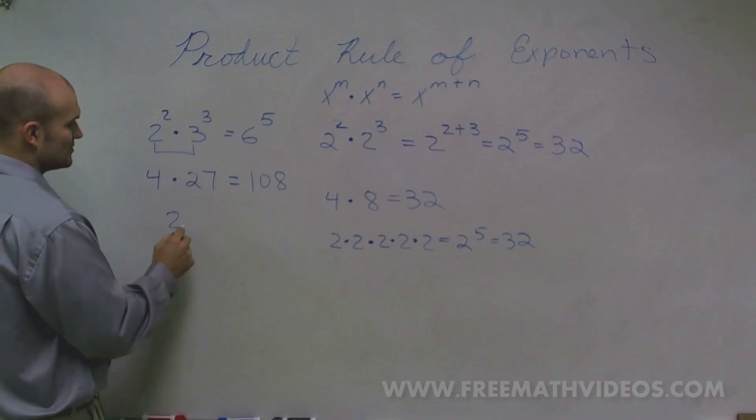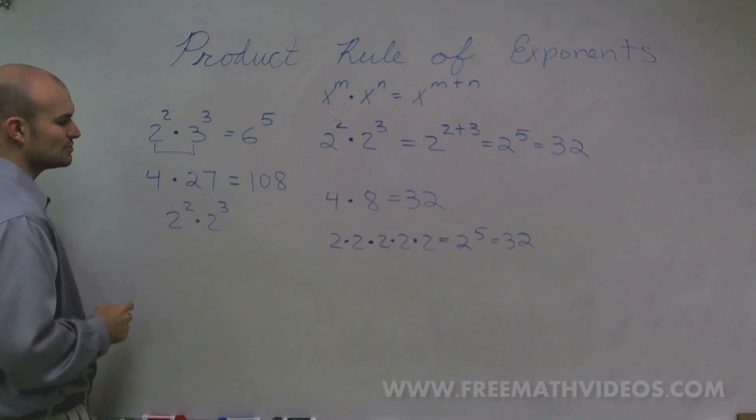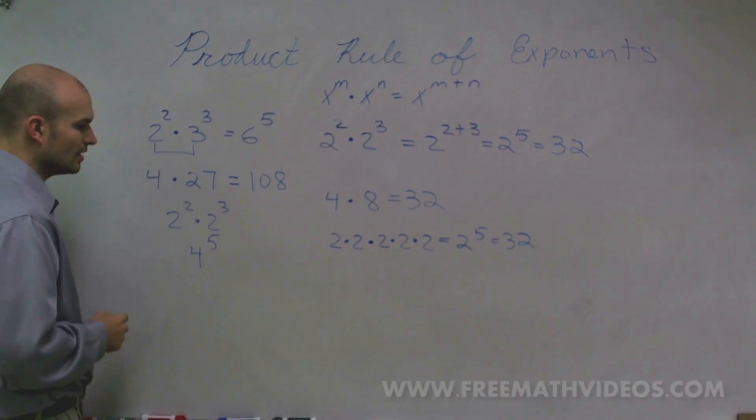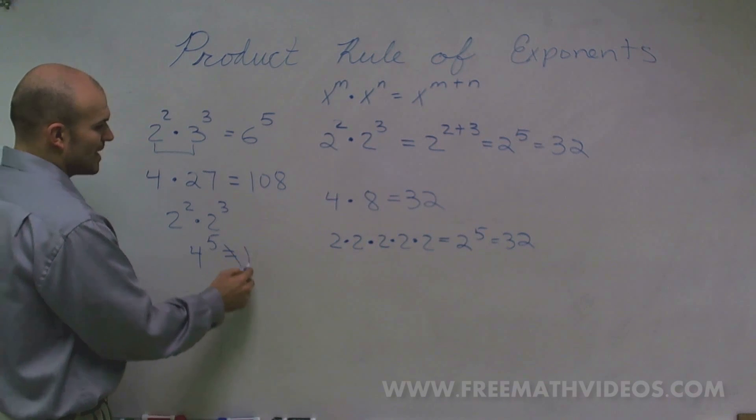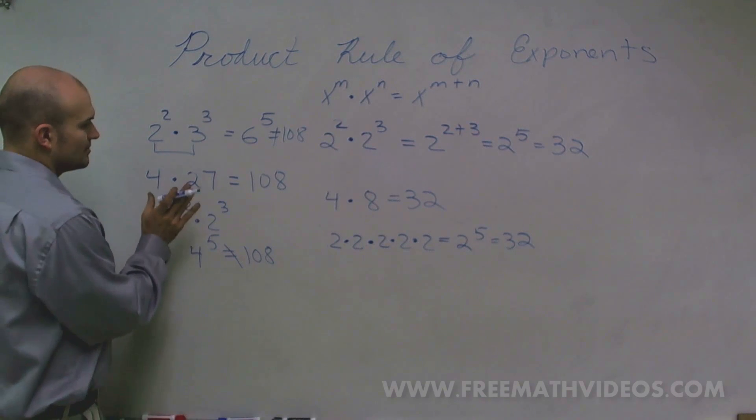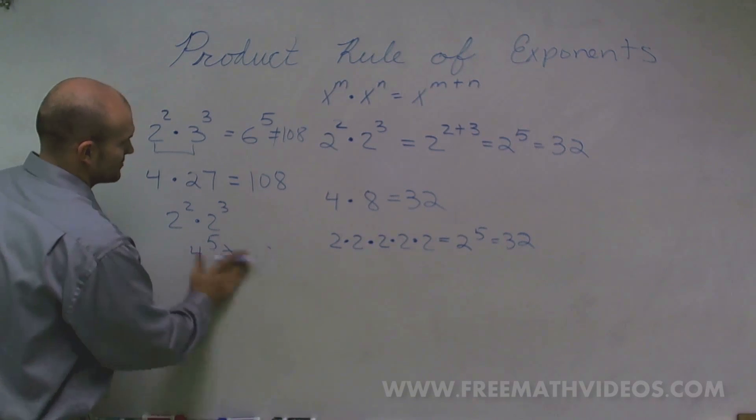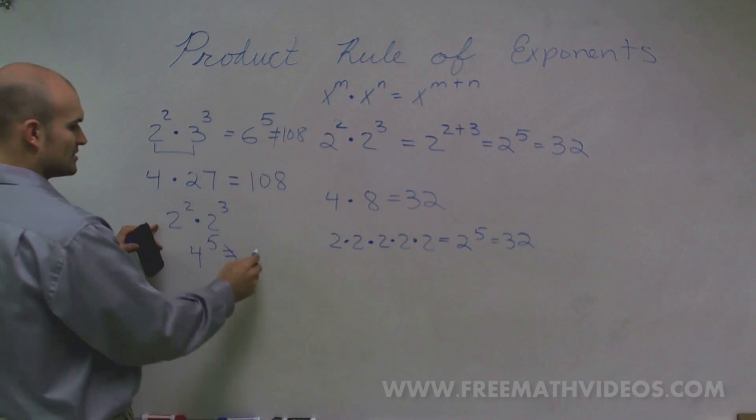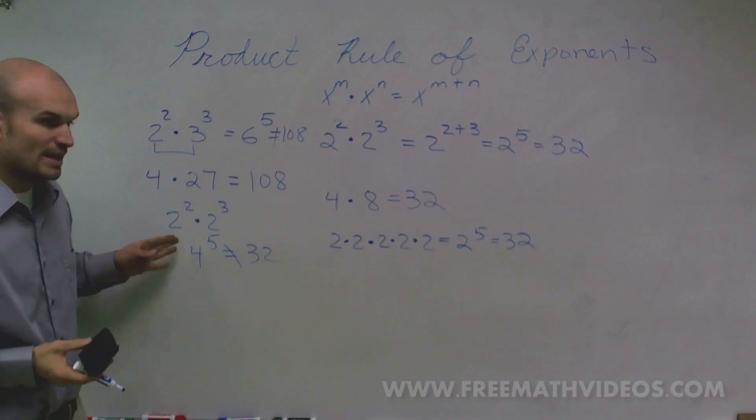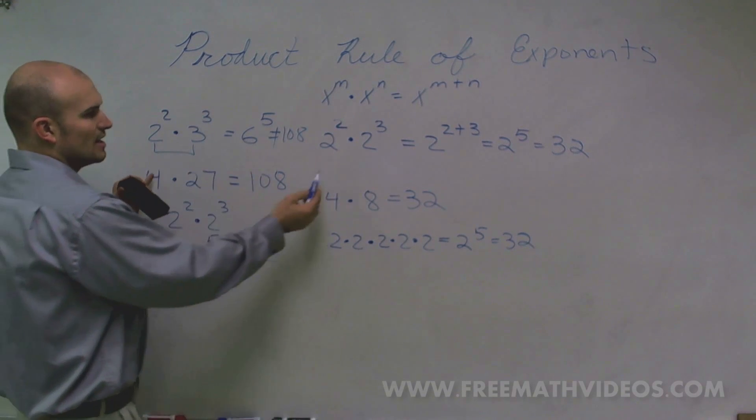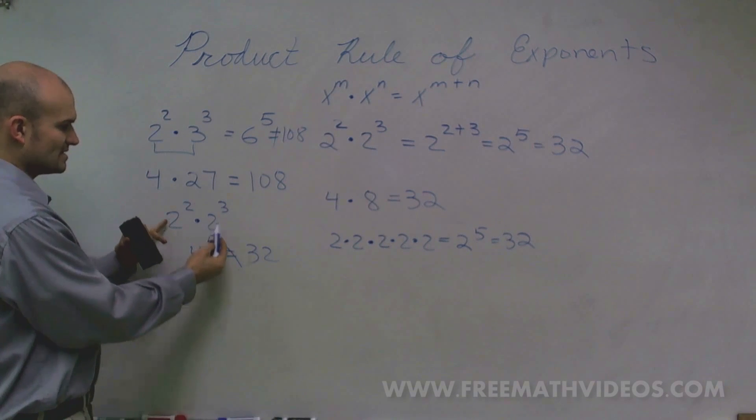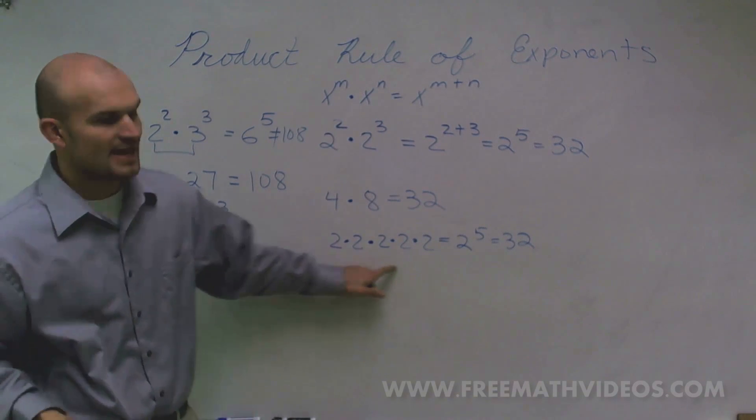Now, the second thing that also doesn't work is you can't multiply those numbers. So if I had 2 cubed times 2 to the third, or 2 squared times 2 cubed, a lot of students want to say it's 4 to the 5th power. I know that 4 to the 5th power does not equal 32, and this one does not equal 108. So we obviously know that your bases are still going to remain the same. All you're doing is adding the exponents. You don't multiply your bases, nor do you multiply the exponents. You just add the exponents as I illustrated here.